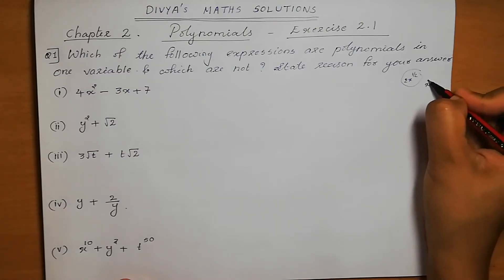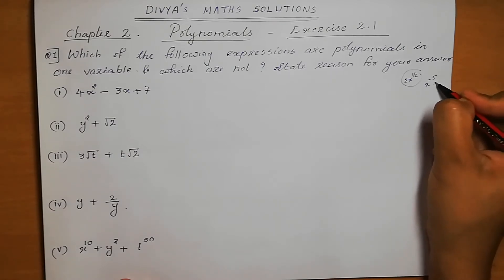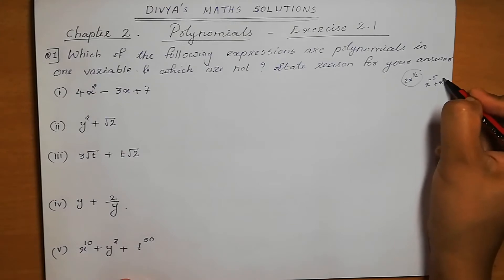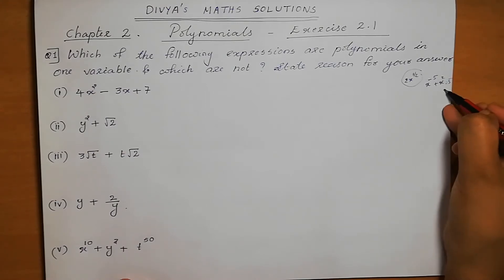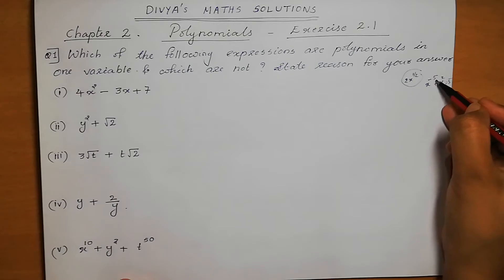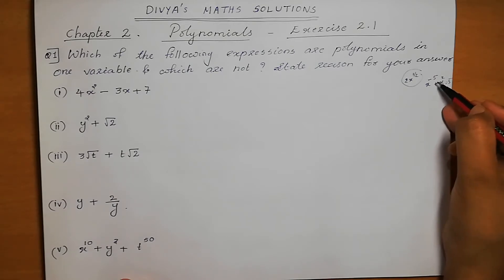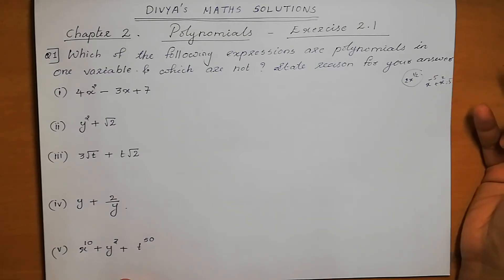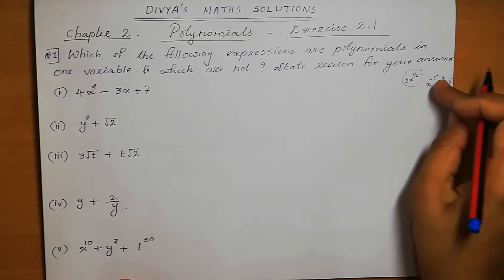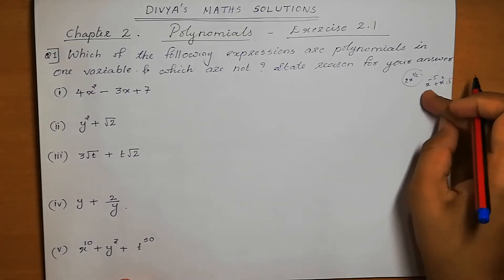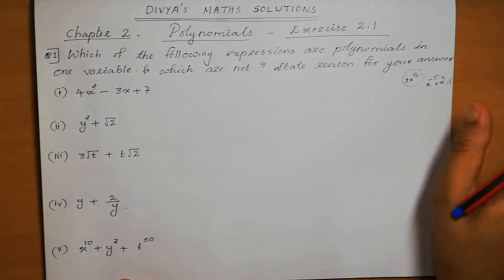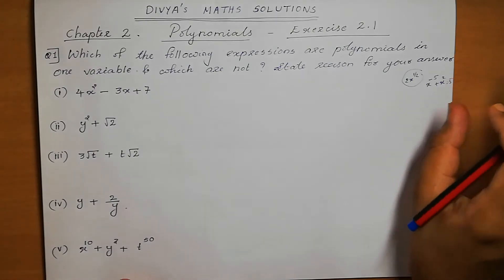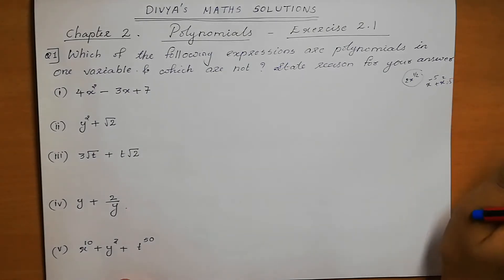For example, 2x power 1/2 is not a polynomial because the power of x is not a whole number — it is a fraction. Similarly, x power minus 5 plus x squared equals 5 is also not a polynomial because the power is a negative value. The power of the variable must always be a whole number for an expression to be called a polynomial.